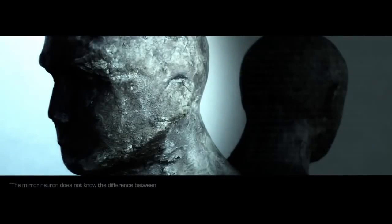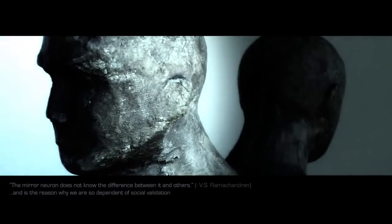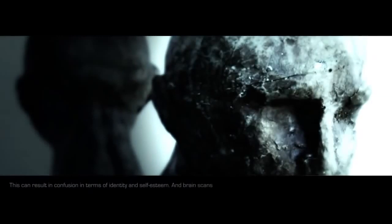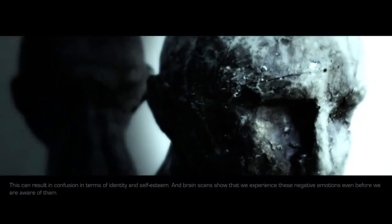The mirror neuron does not know the difference between it and others, and is the reason why we are so dependent on social validation and why we want to fit in. We are in a constant duality between how we see ourselves and how others see us. This can result in confusion in terms of identity and self-esteem, and brain scans show that we experience these negative emotions even before we are aware of them.